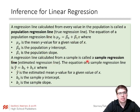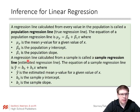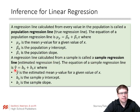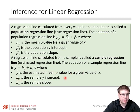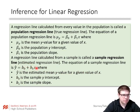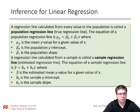A regression line calculated from a sample is called a sample regression line, or the estimated regression line. The equation for a sample regression line is y-hat equals b naught plus b1 x, or a plus bx, where y-hat is the estimated mean y value for a given value of x, b naught is the y-intercept, and b1 is the slope.